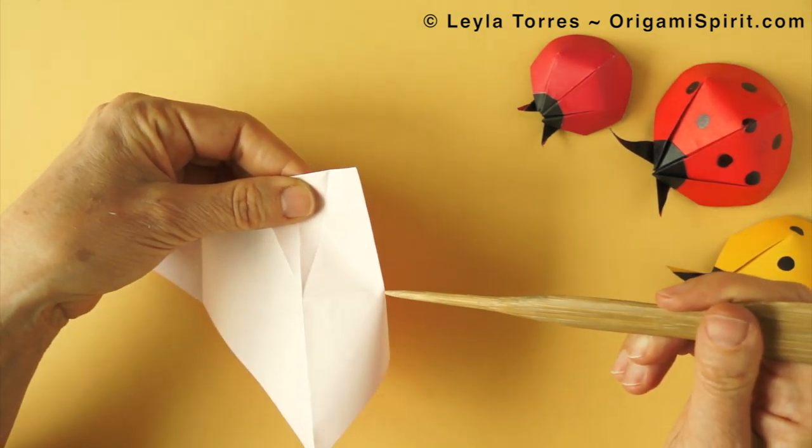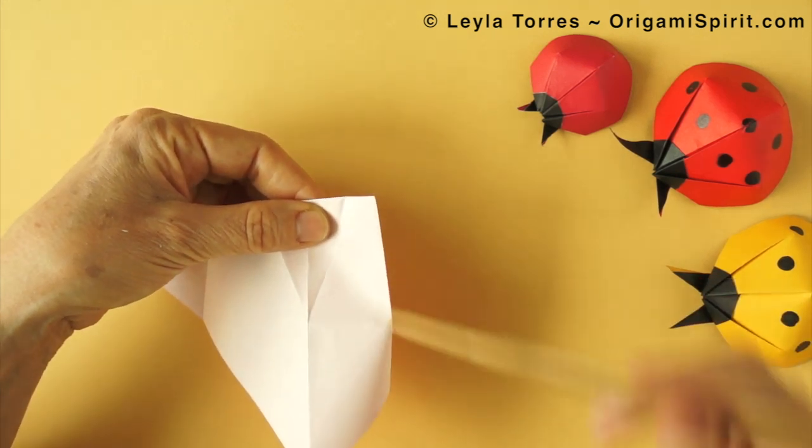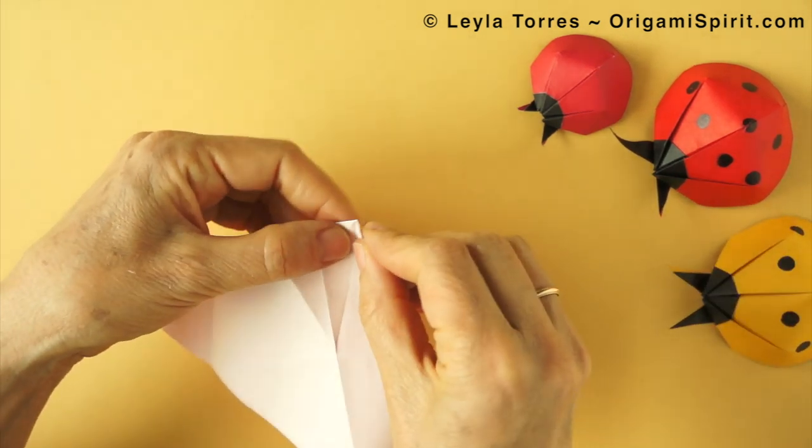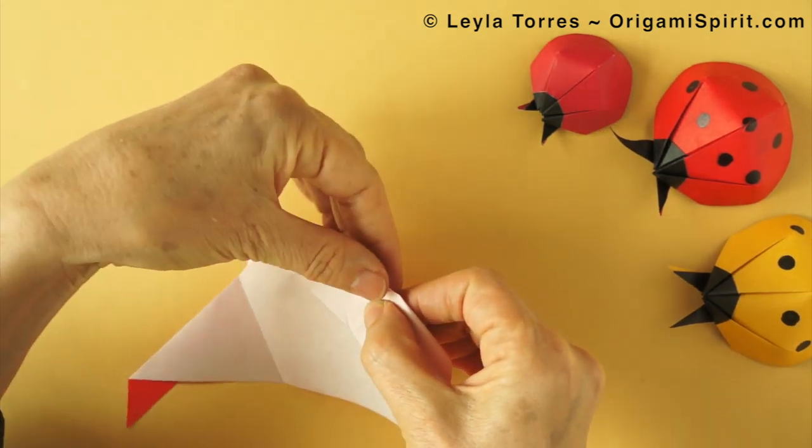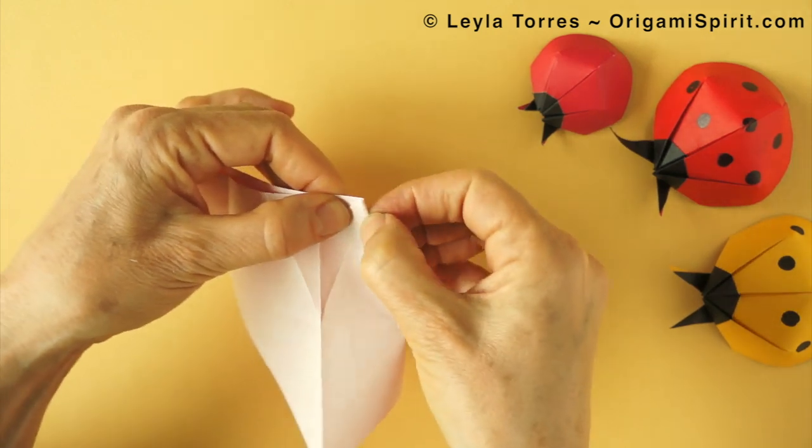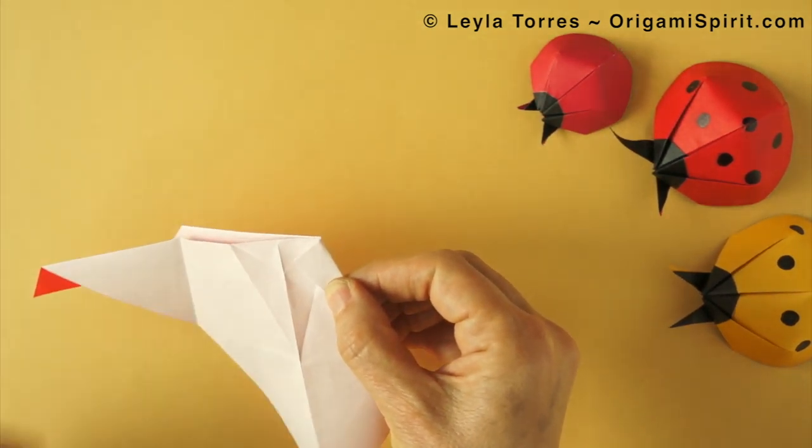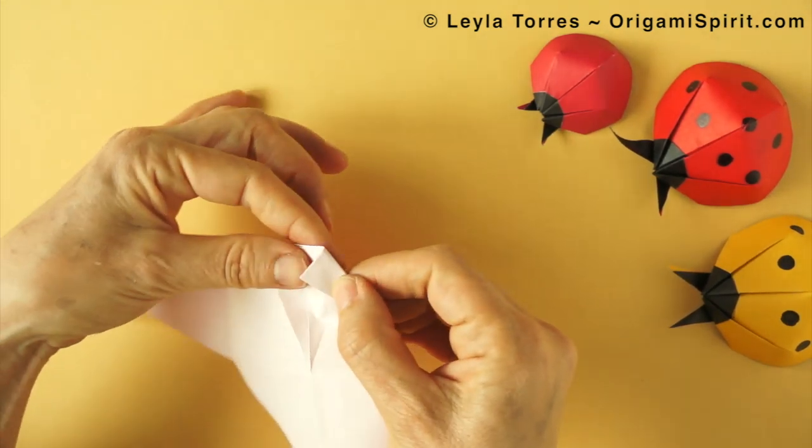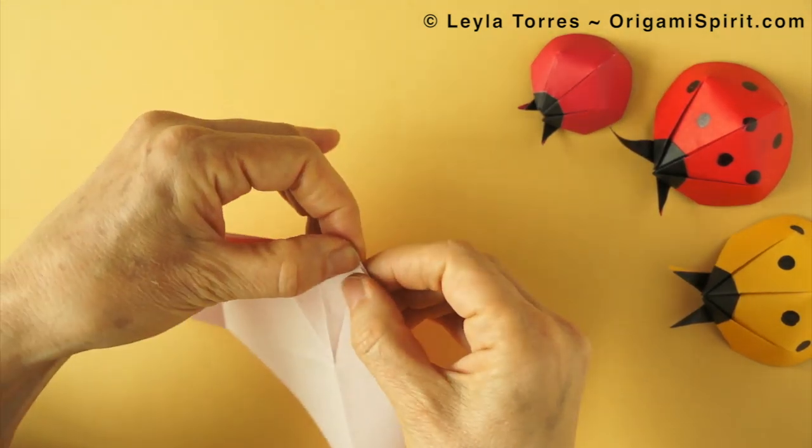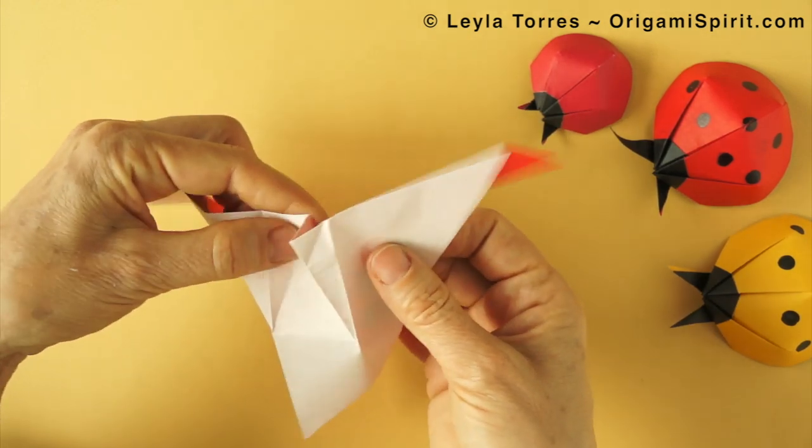We make a fold connecting that point with this point. This very short edge will coincide with this. And for the moment we unfold.